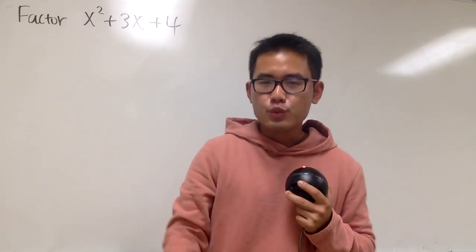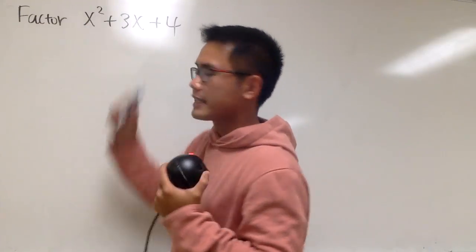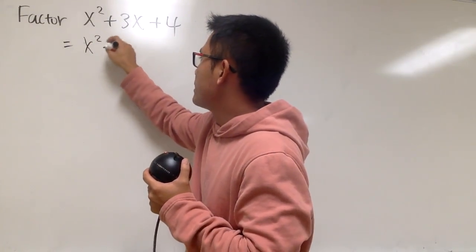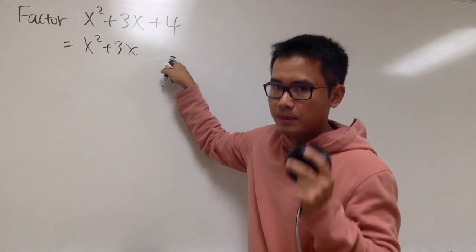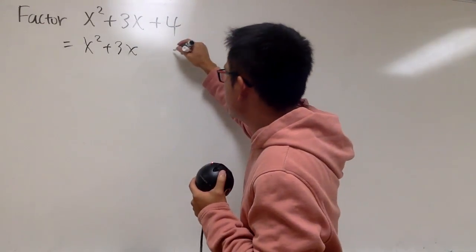And I'll do this with completing the square. First of all, we notice that we have a 1 in front of x squared, so that's good. So you see that this is going to be x squared plus 3x, and we'll leave a space for the magic number. I will show you, don't worry. So this is plus 4 after that.